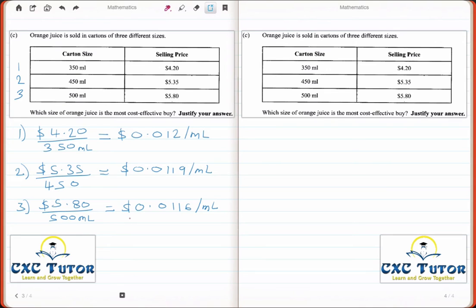So the most cost-effective juice to buy is in fact juice number 3. Although you're paying more upfront, you're paying the least amount for every one milliliter of orange juice in the container.